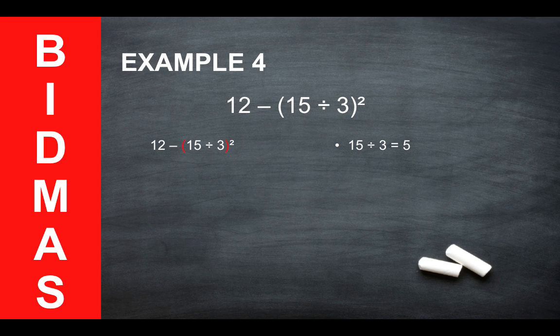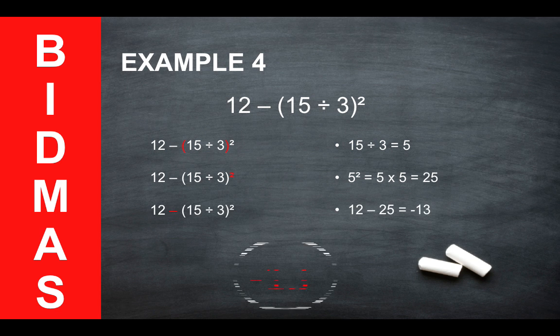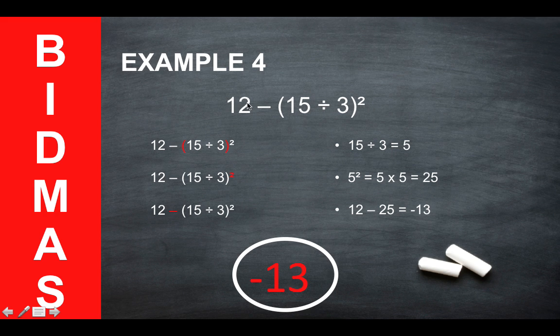Next, you need to work out the indices. So we are squaring the value of the brackets. So 5 squared is 5 times 5, which will give you 25. And finally, we have the subtraction. So we do 12 minus 25 will give you the answer of minus 13. Remember, you've got the 12 part here first, so you wouldn't change this around just because that number is bigger. It just means that your answer is a negative number as opposed to a positive number.